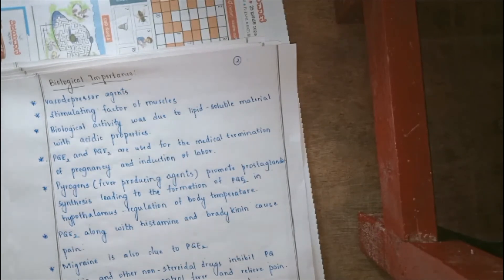Prostaglandins are used in the treatment of various other systems also, like for example, gastric ulcers, hypertension, thrombosis and asthma.